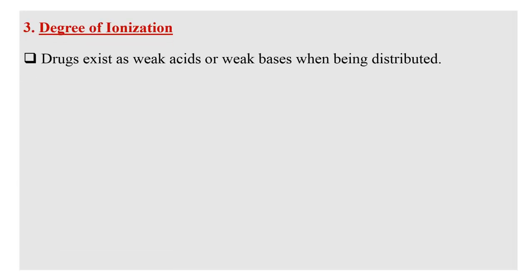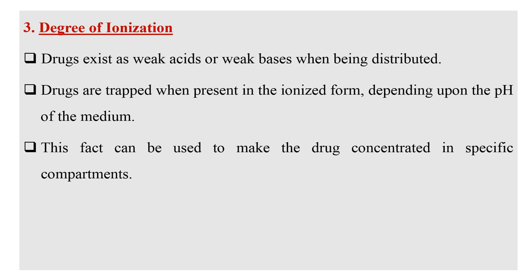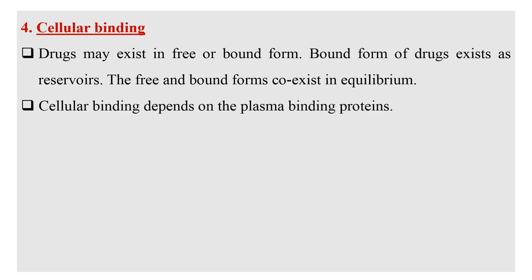The next parameter is degree of ionization. Drugs exist as weak acids or weak bases when being distributed. Drugs are trapped when present in the ionized form depending upon the pH of the medium. This fact can be used to make the drug concentrated in a specific compartment of the body. Coming to cellular binding, drugs may exist in free or bound form. The bound form of a drug exists as a reservoir, and the free and bound forms co-exist in equilibrium.